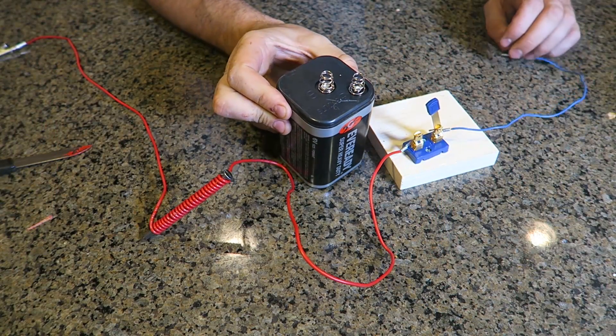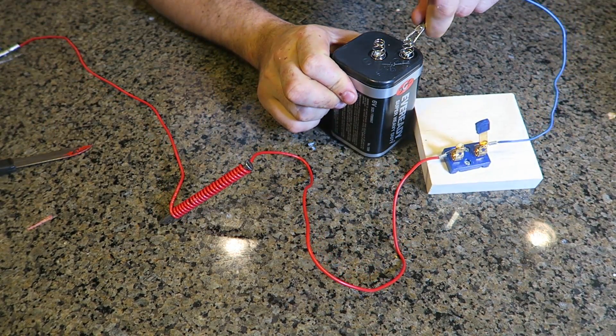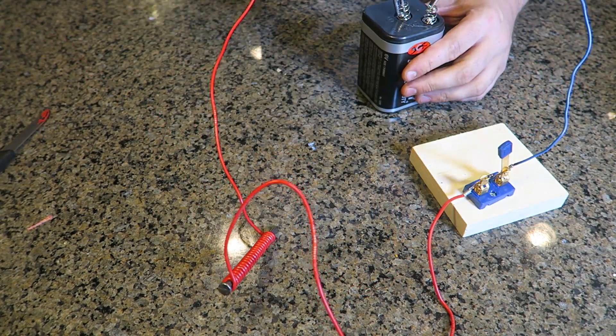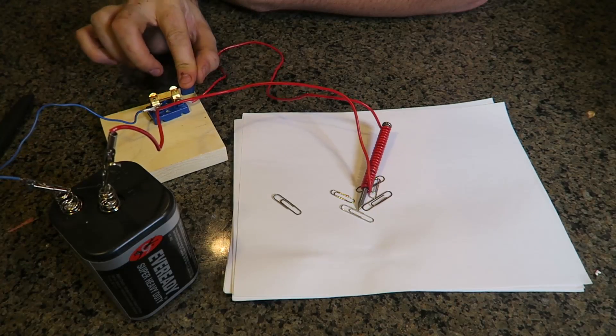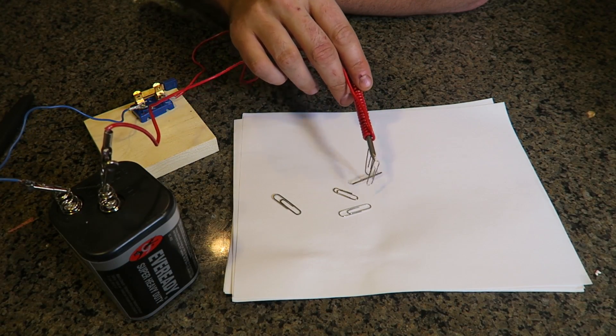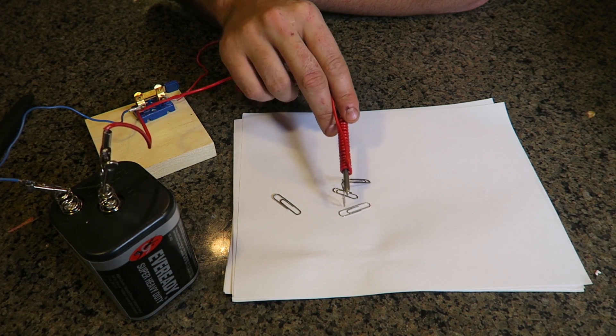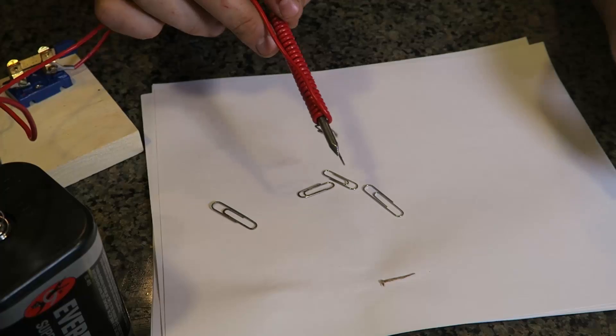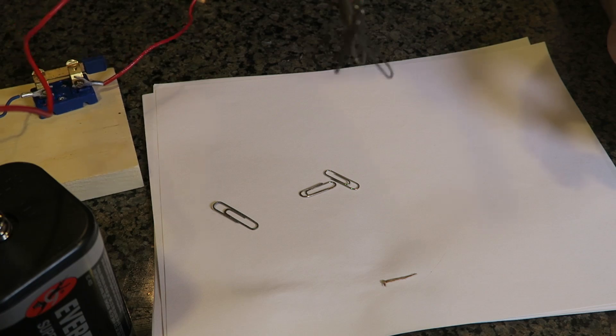Now we're going to get 6 volts battery and plug this in and boom. Let's turn it on. I put a bunch of paper clips and as you can see, they are magnetizing. Pretty cool, huh? And as you can see, it's all magnetizing.